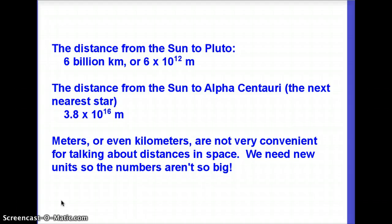This is a science class, so we use metric. If you think about the solar system — going all the way out to Pluto — the distance from the Sun to Pluto is 6 billion kilometers, which is 6 times 10 to the 12 meters. That's a really big number to deal with if you're going to do calculations, and it gets even worse at bigger scales, like from the Sun to Alpha Centauri.